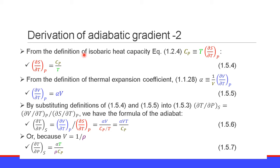From the definition of the isobaric heat capacity, Cp is defined as temperature T times the partial derivative of entropy S with respect to temperature T at constant pressure P, equation 1.2.4. Therefore, the partial derivative of S with respect to T at constant P equals Cp divided by T. Equation 1.5.4.